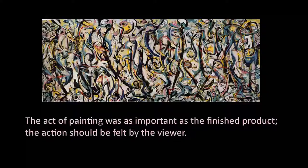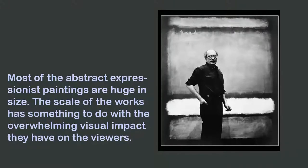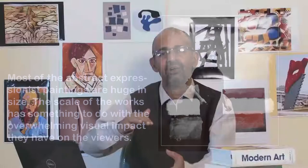Another important aspect with regard to Abstract Expressionist paintings is this: usually, most Abstract Expressionist paintings — whether by Jackson Pollock, Willem de Kooning, Franz Kline, or as we see in this photograph with the painter Mark Rothko standing right in front of his paintings — most of these paintings are big in size. They are huge in scale and thus they have an overwhelming visual impact on the viewers. This is a very conscious and deliberate choice to work on canvases which are big, huge, massive in scale.